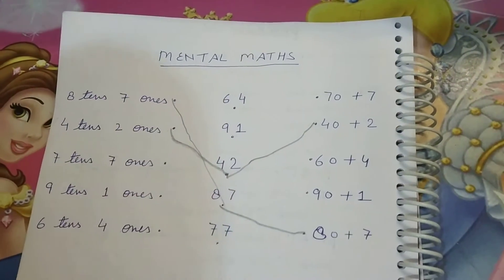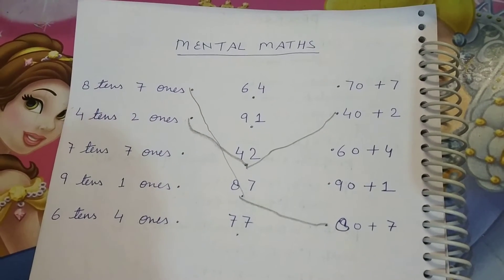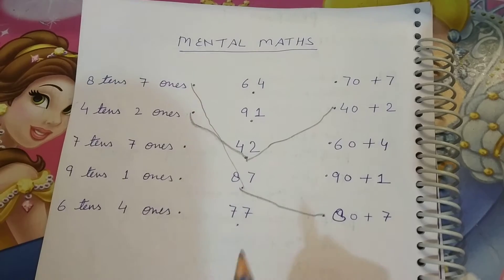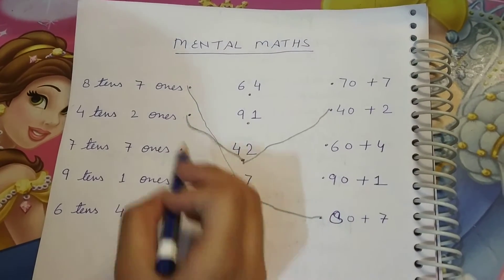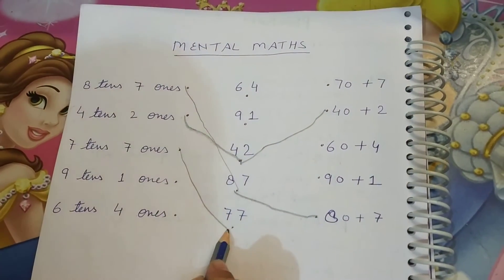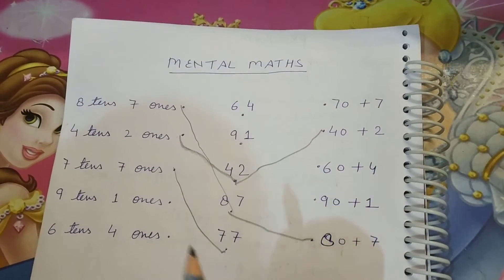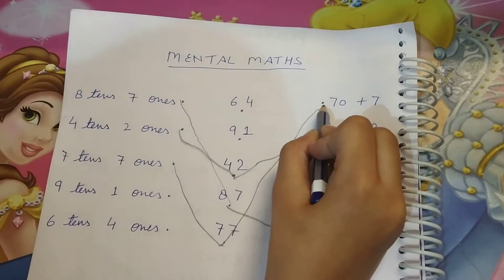Now seven tens and seven ones. What's that? 77. Where is this line? 77? Yeah. Match it. Good. Now this line? 77. Yeah. Match it. Good.